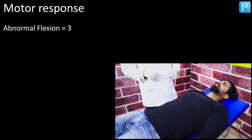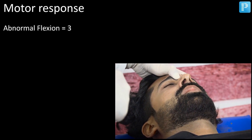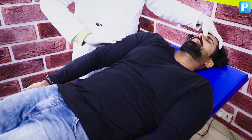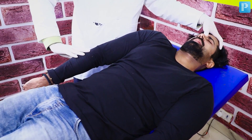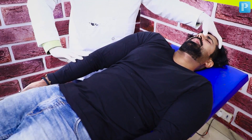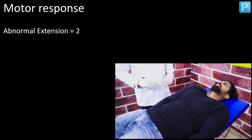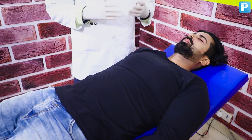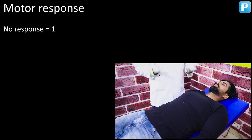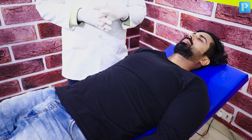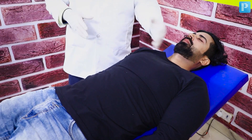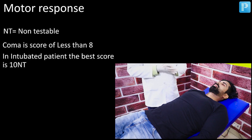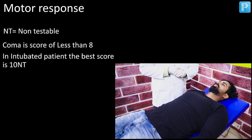The worst case scenario is what I am going to elicit next. You can notice the movement of the arm of the patient — a very characteristic finding. This is a very bad prognostic finding: you can notice an abnormal extension occurring. On the other hand, if I do all these activities and there is no response, then it would be a score of 1. In circumstances where there is polytrauma — both arms fractured, both legs fractured — I am definitely going to call it NT, that is non-testable.